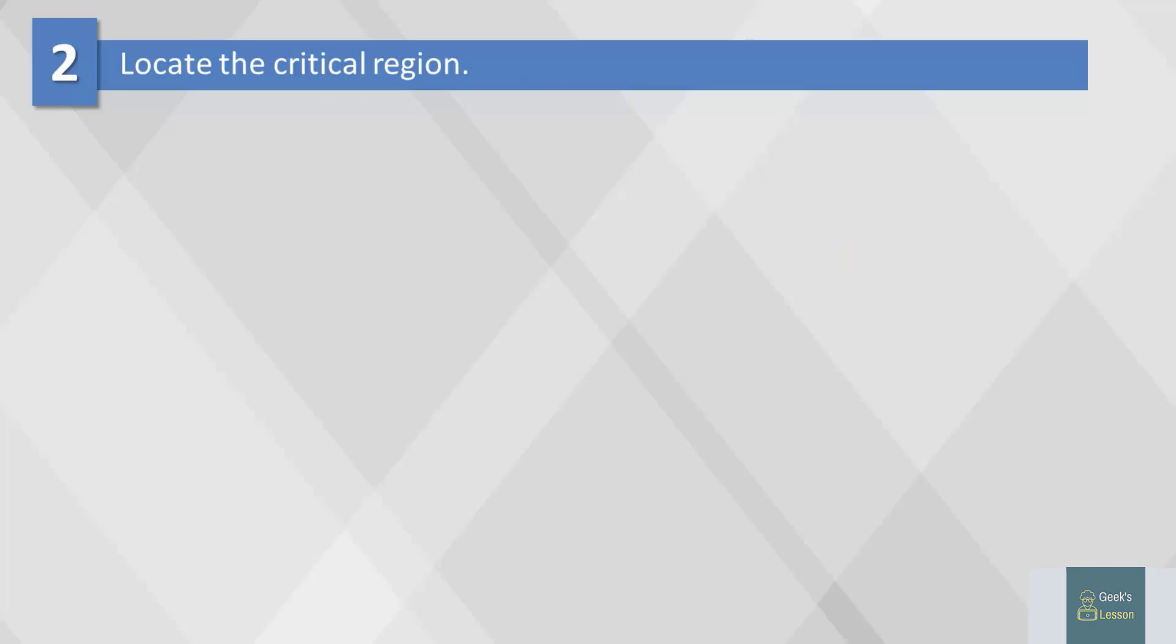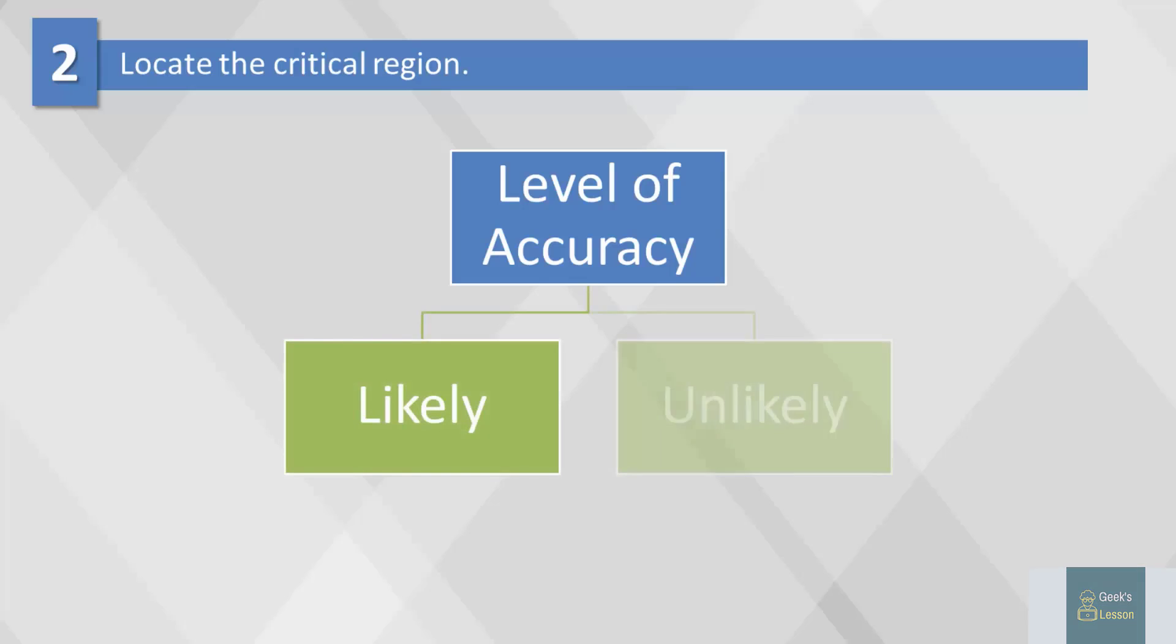In step two, we will locate the critical region. Once we've established the research question, we have to define the level of accuracy with which we want to measure our test statistic. Any estimate from a sample will not be exactly the same as the population parameter, so we have to decide what we think is likely versus unlikely. This is called locating the critical region.